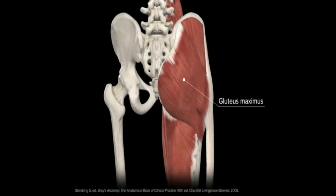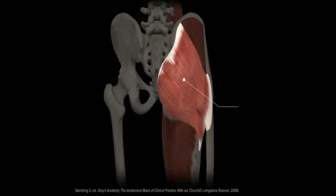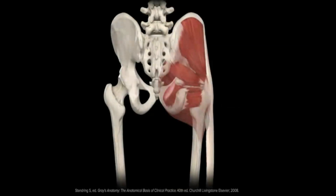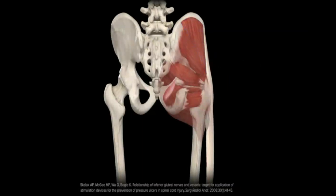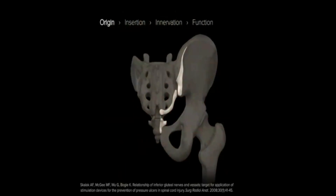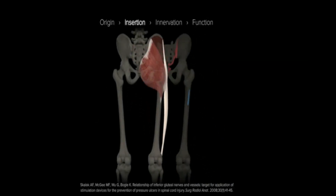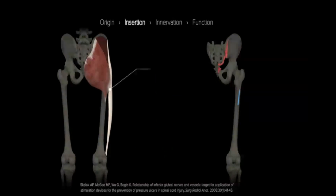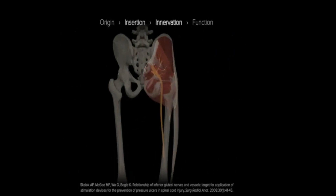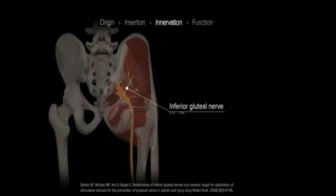The largest and most superficial of the gluteal group is the gluteus maximus. The gluteus maximus muscle blankets the other gluteal muscles except for the most superior portion of the gluteus medius. This quadrangular-shaped muscle originates through a broad attachment spanning the bony surfaces of the ilium, sacrum, and coccyx. Fibers of the muscle course obliquely in the inferolateral direction and insert onto the iliotibial tract and gluteal tuberosity of the femur. The gluteus maximus is innervated by the inferior gluteal nerve originating from the L5 to S2 nerve roots.